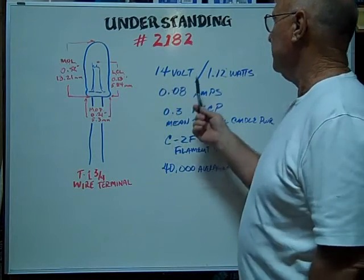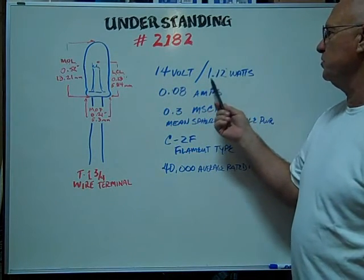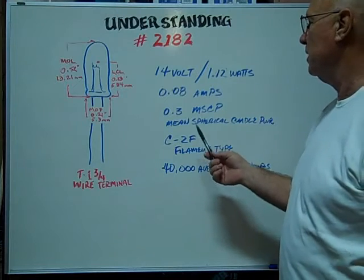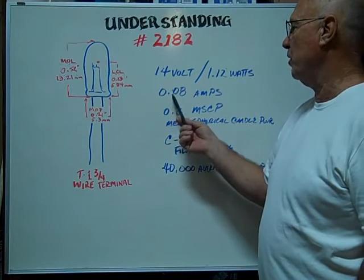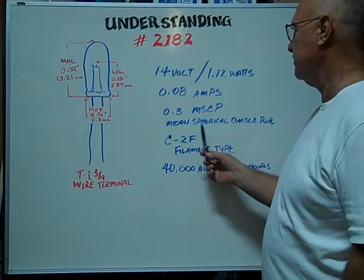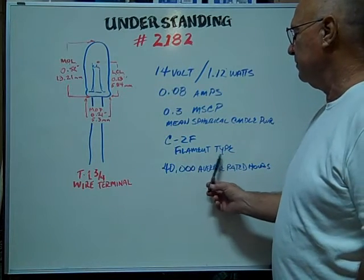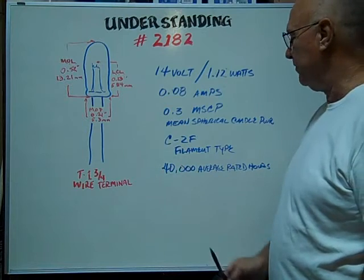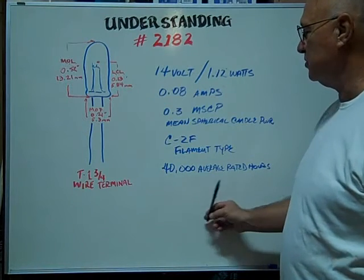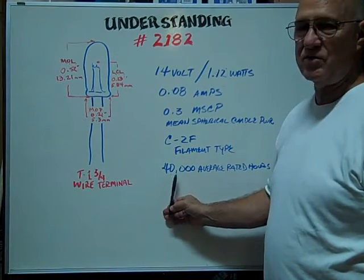It's rated at 14 volts. The wattage is 1.12. Amperage is rated at 0.08. The mean spherical candle power is 0.3. Filament type is a C2F. The average rated hours are 40,000 hours.